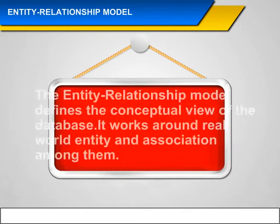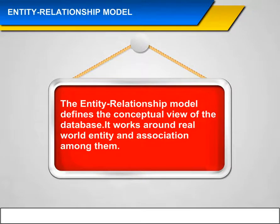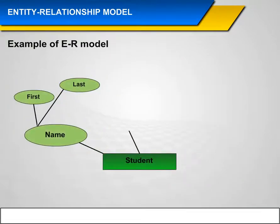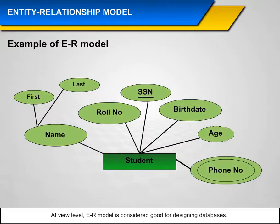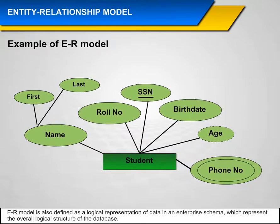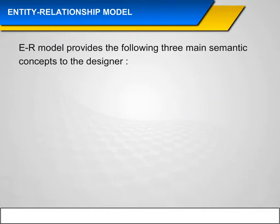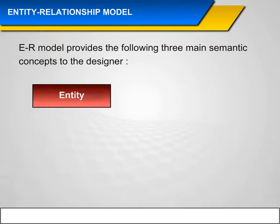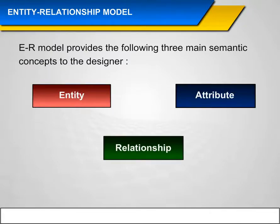The Entity-Relationship (ER) model defines the conceptual view of a database. It works around real-world entities and the associations among them. At the view level, the ER model is considered good for designing databases. It is also defined as a logical representation of data in an enterprise schema, representing the overall logical structure of the database. The ER model provides three main semantic concepts: Entity, Attribute, and Relationship.